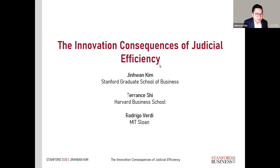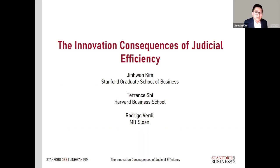At a very high level, the basic idea of this project is to investigate the relationship or impact of what we call judicial efficiency — broadly defined as a better match between a judge's expertise and certain patent cases — and how that better match affects firms' incentive to innovate. The key force here is that when there is higher judicial efficiency, it reduces the uncertainty of litigation outcomes for patents, which in turn incentivizes firms to innovate more.